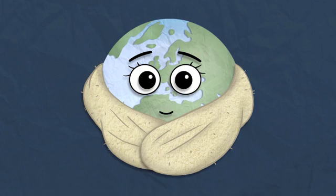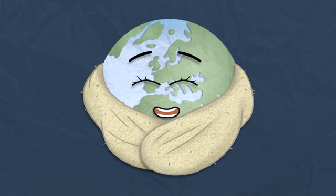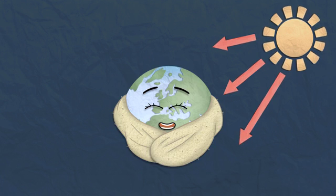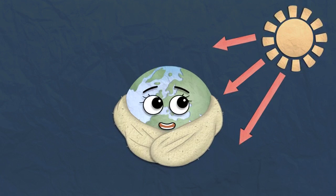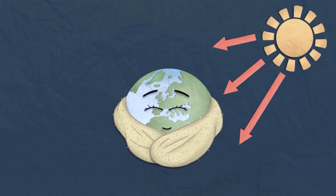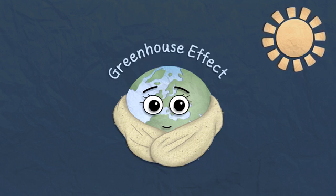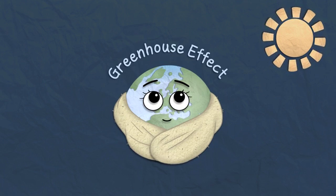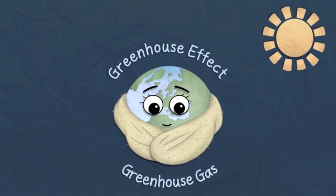The CO2 in our atmosphere creates a big blanket around our planet Earth. The heat that comes from the sun is trapped in this big blanket, so that it doesn't escape into space. This is called the greenhouse effect. CO2 is also called a greenhouse gas.